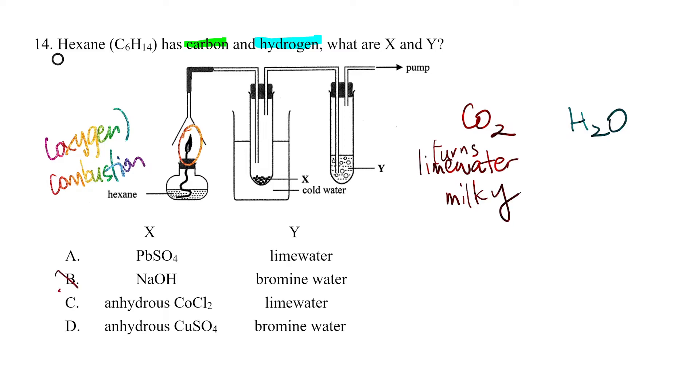What are the options given? In B and D it's wrong because it's only in A and C. For water, one of the tests for water is anhydrous copper chloride. So the answer is C.